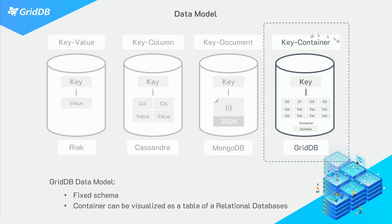GridDB uses a unique key-container data model. In this model, a key points to a container, which is essentially a columnar table. There's no relational graphic because you can essentially look at this as a relational database table. The container's key is often referred to as its name — so if the key was 'sensor1', the entire container would be called sensor1. Different containers can have different schemas and row key types, but unlike SQL tables, containers can't have constraints where values in one container have a fixed relationship with another container — there are no inter-collection relationships.